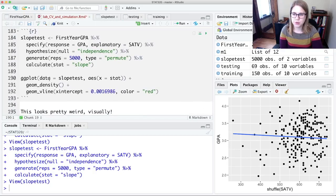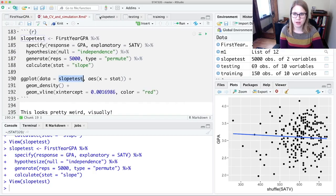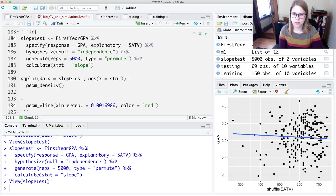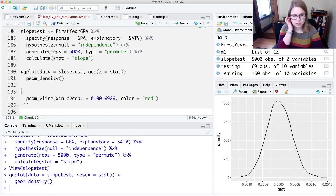So these are all slope values that we could have observed if the null hypothesis were true. And then what we're going to do is we're going to take that slope test data, we have the stat variable, and that's going to be our x variable. We're going to make a density plot, and let's just look at that. So this is the distribution under the null hypothesis. So it's centered around zero.